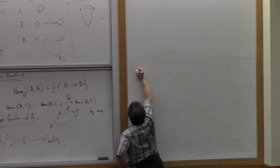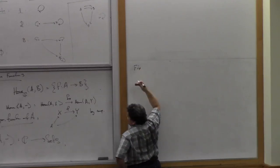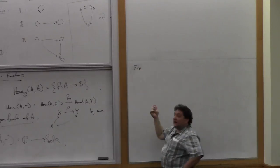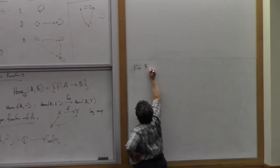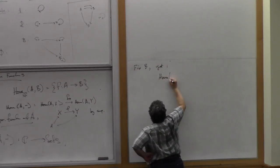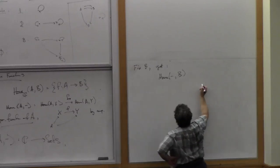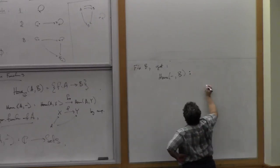This was fix A, now fix B. What I really mean is fix the first argument, fix the second argument, right? Fix B, and we get HOM(-,B). This is arrows into B, and it goes like this.